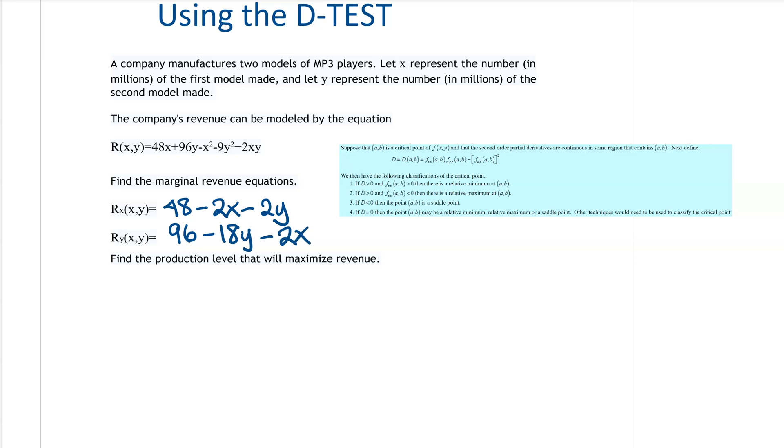Now if we're going to find the production level to maximize the revenue, we're going to use the D-test. And to do that, what we have to do is find the critical points. So there might be one, there might be multiple.